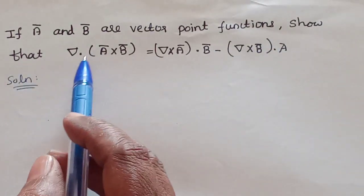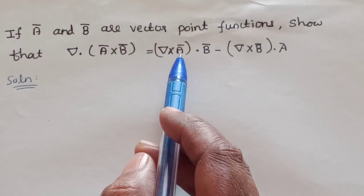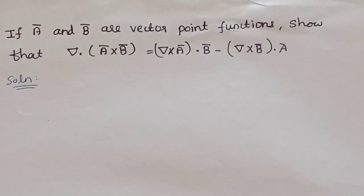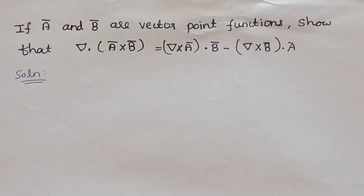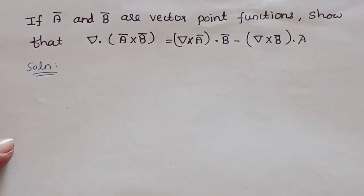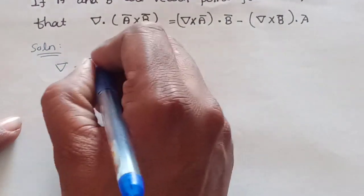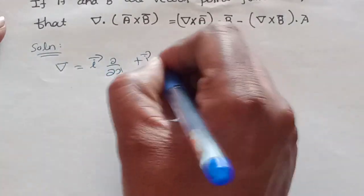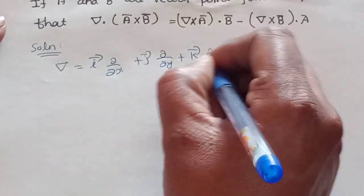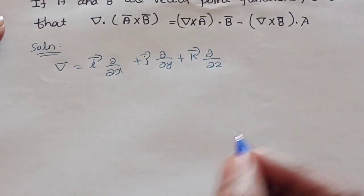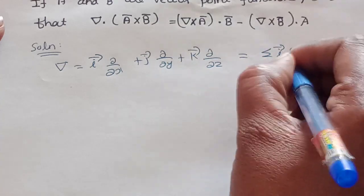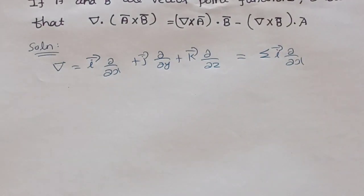In this unit, we will find the del operator. The del vector operator is i, j, k — that is, i vector ∂/∂x plus j vector ∂/∂y plus k vector ∂/∂z. This is the del operator. We have a simple summation notation: sigma of i vector ∂/∂x. Del operator is a short notation.